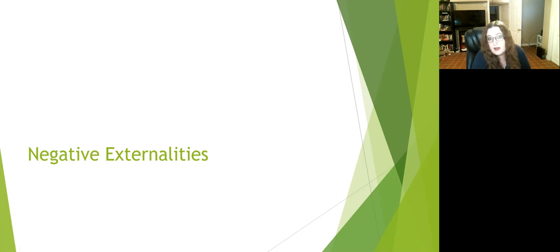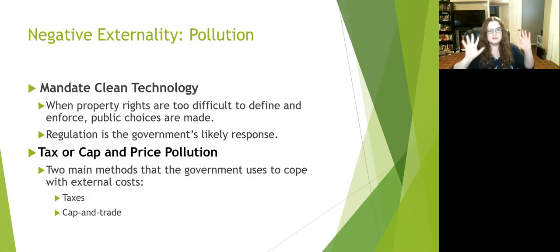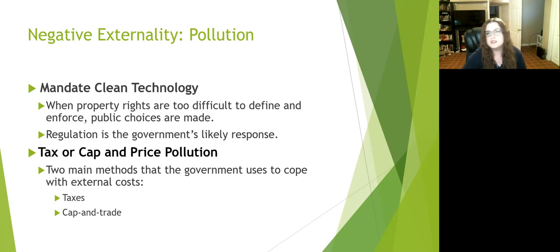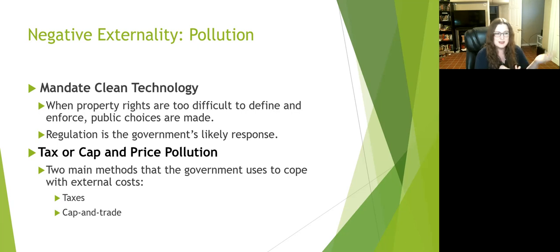Let's go back to thinking about negative externalities. We have negative production externalities — bad costs happening externally from producing something — and negative consumption externalities — bits of harm happening to society from consuming a good or service. For example, a steel company polluting a river, or a paper mill causing deforestation and CO2 problems. We can mandate clean technology in response.